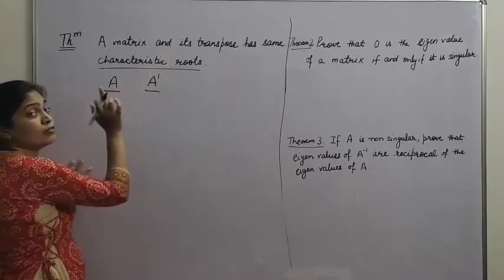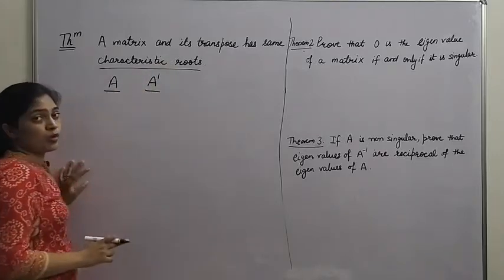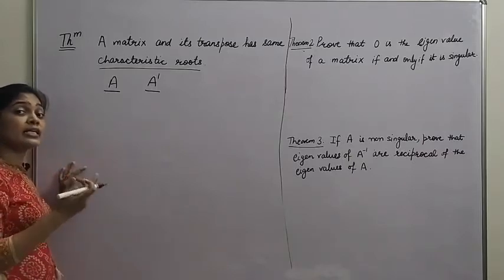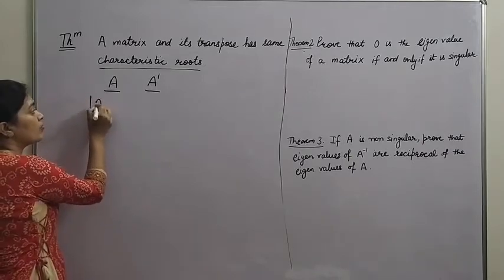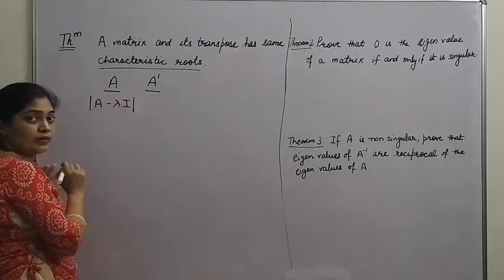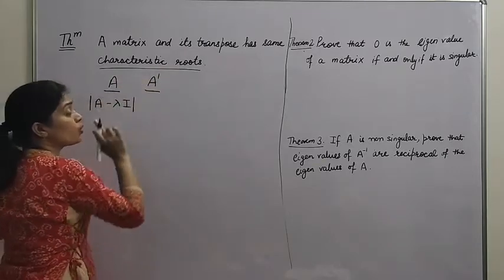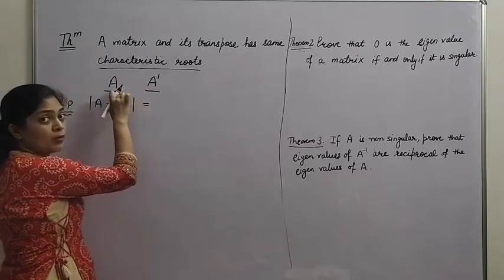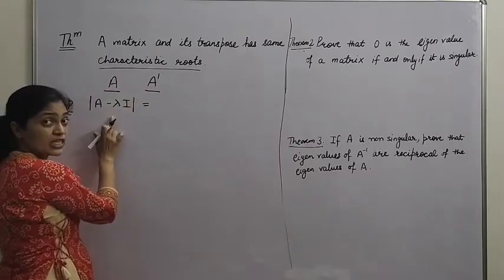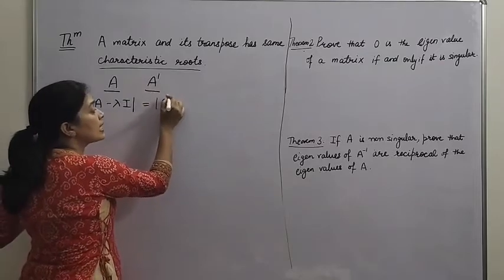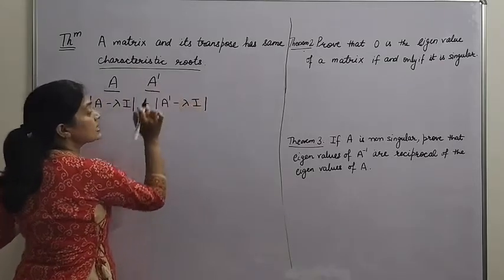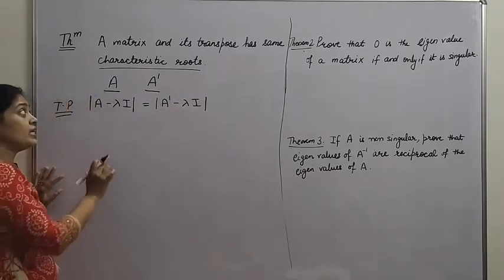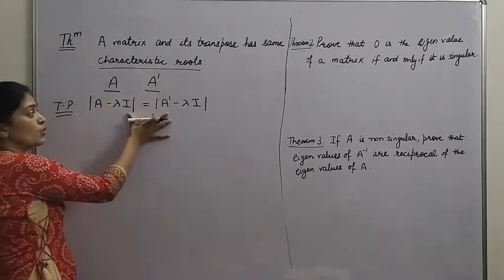To prove this result, we prove that the corresponding characteristic polynomials of these two matrices will be the same. For any matrix, its characteristic polynomial is the determinant of A minus lambda I. So to show the characteristic roots are the same, we have to show that the characteristic polynomial corresponding to matrix A — which is det(A - λI) — is equal to the characteristic polynomial corresponding to matrix A transpose, which is det(A transpose - λI). To prove this result, we have to prove these two values are equal.